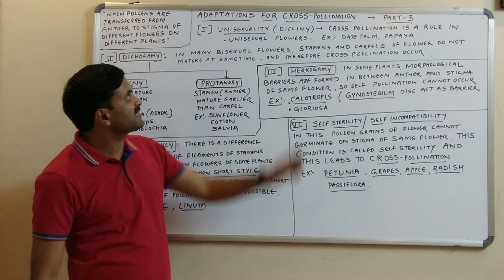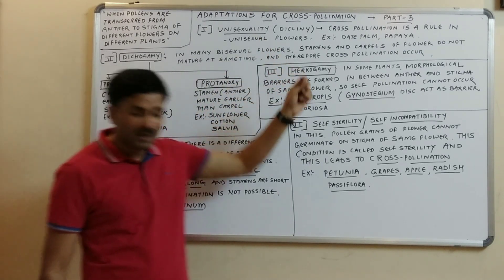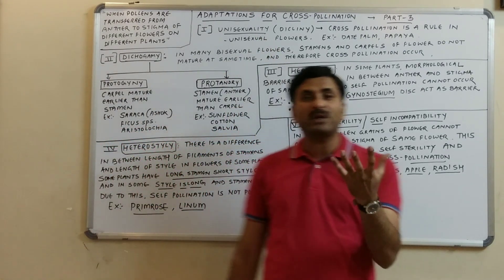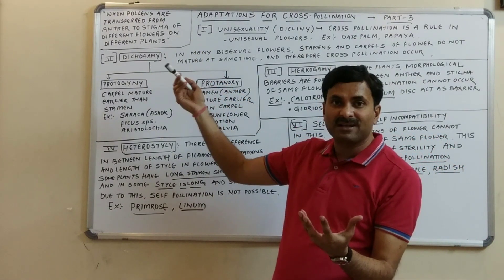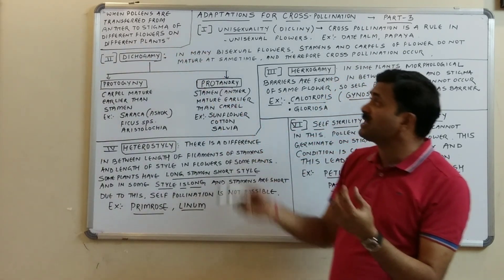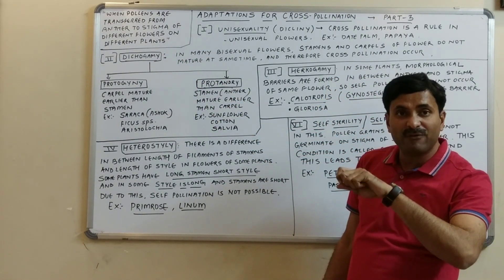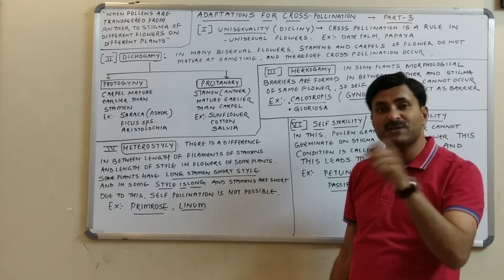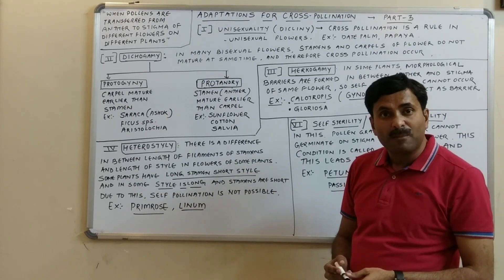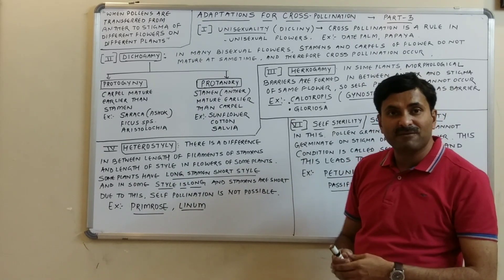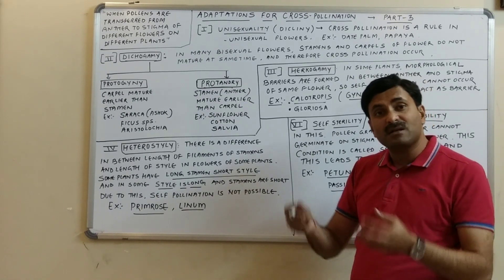Hello, today we will be discussing the adaptations for cross-pollination. Cross-pollination occurs when pollen grains are transferred from the anther to the stigma of different flowers present on two different plants but of the same species.